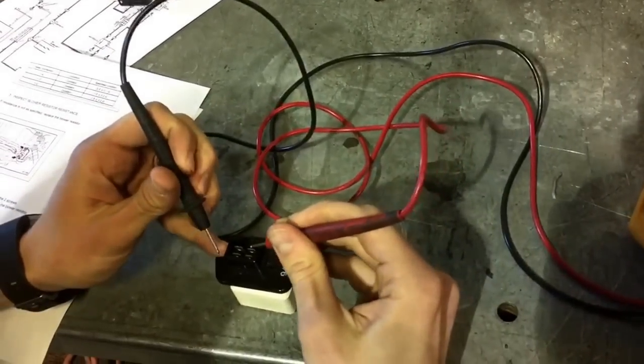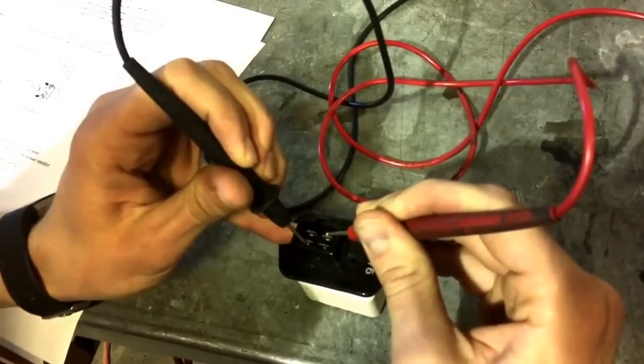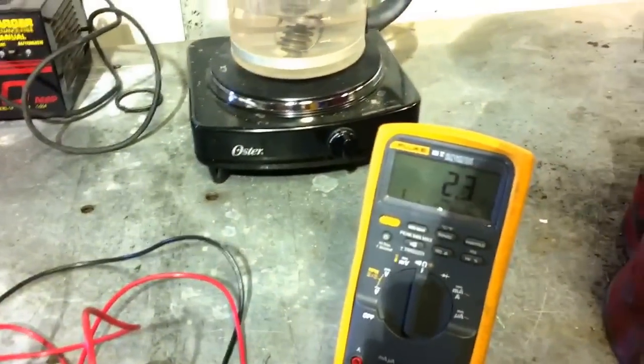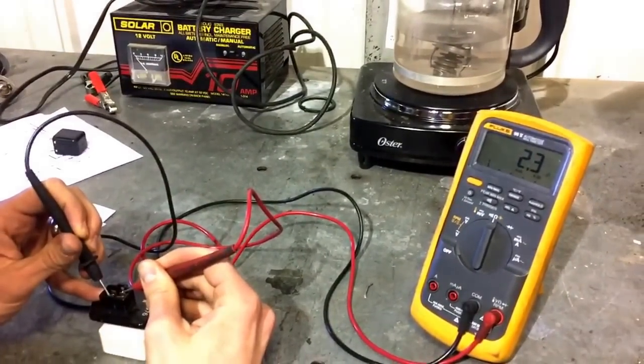So we're going to check between this terminal and the terminal across the connector. Go ahead and show the meter. And we're at 2.3, and the spec is 2.2 plus or minus .1 ohms, so that's good.